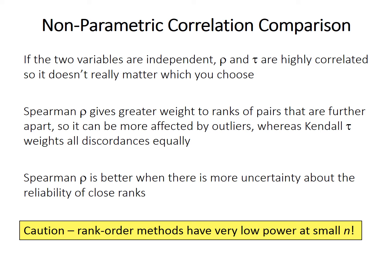Which of these two methods should you choose? For most purposes, either works — if your answer differs depending on which method you use, the result probably isn't very robust anyway. That said, because Spearman's rho is based on covariance of the ranks — calculated as the sum of products of deviations from the mean rank — it is more sensitive to outliers. An outlier point will have a very large deviation and contribute a lot to the correlation. Kendall's tau weighs all discordances and concordances equally, regardless of how extreme an outlier a point might be, so it may be somewhat better when you have outlying points.